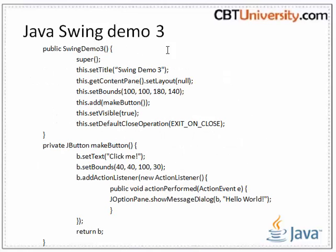Let us take another Swing demo. In this example, we extend javax.swing.JFrame as the superclass and add our own widgets to it — in this case, a JButton. The layout is set to null using the container's setLayout method, since JFrame uses java.awt.BorderLayout as its default layout manager. With BorderLayout, anything added to the container is placed in the center and stretched. Most real-world GUI applications would prefer to use a layout manager instead of placing everything on absolute coordinates.